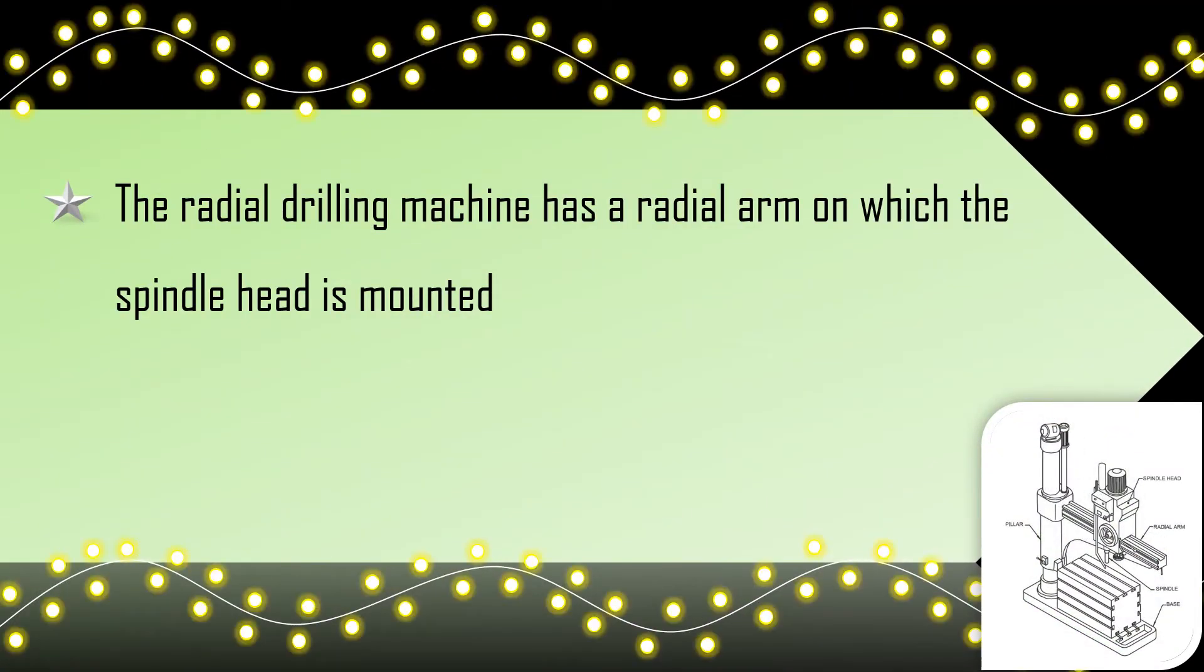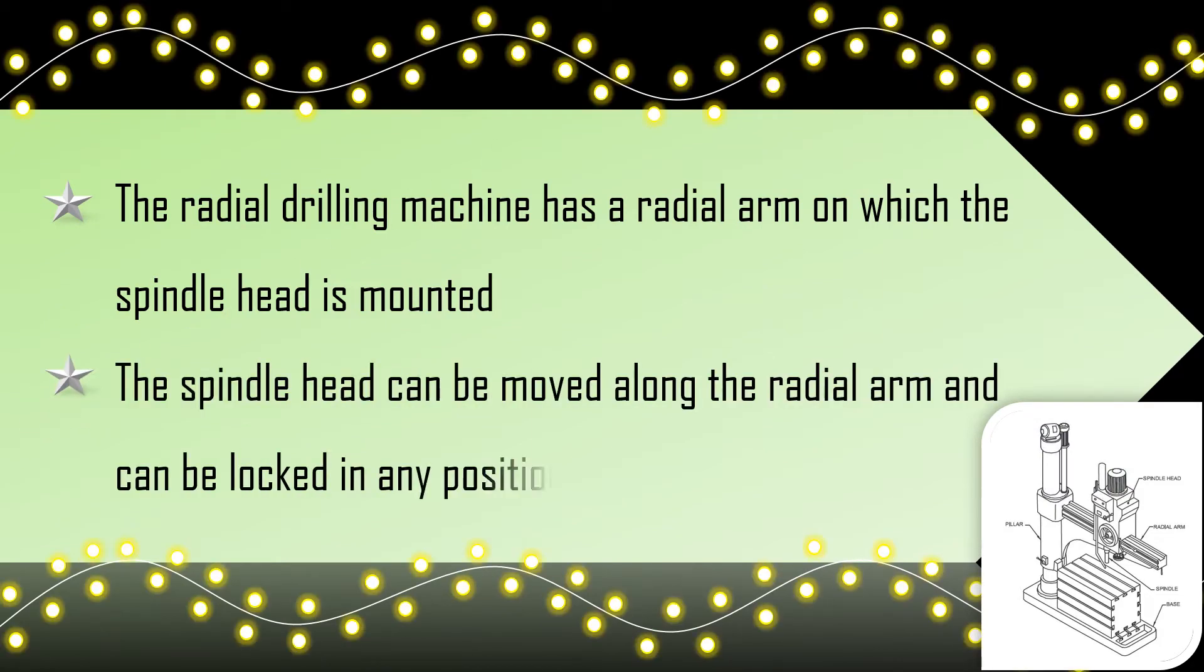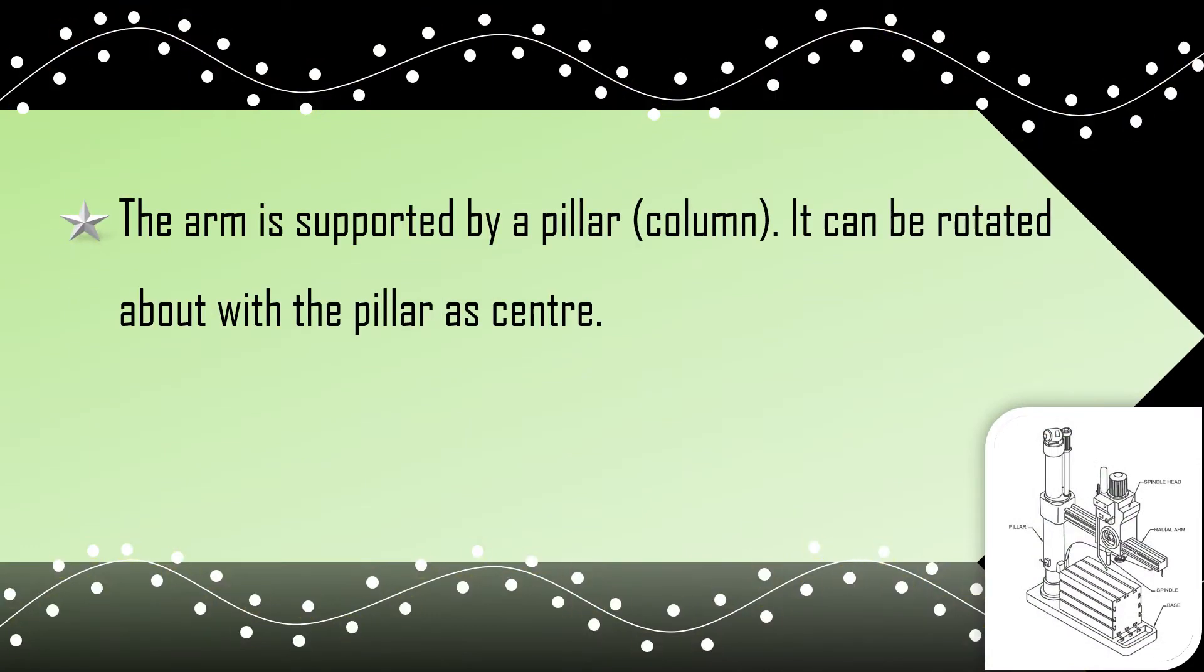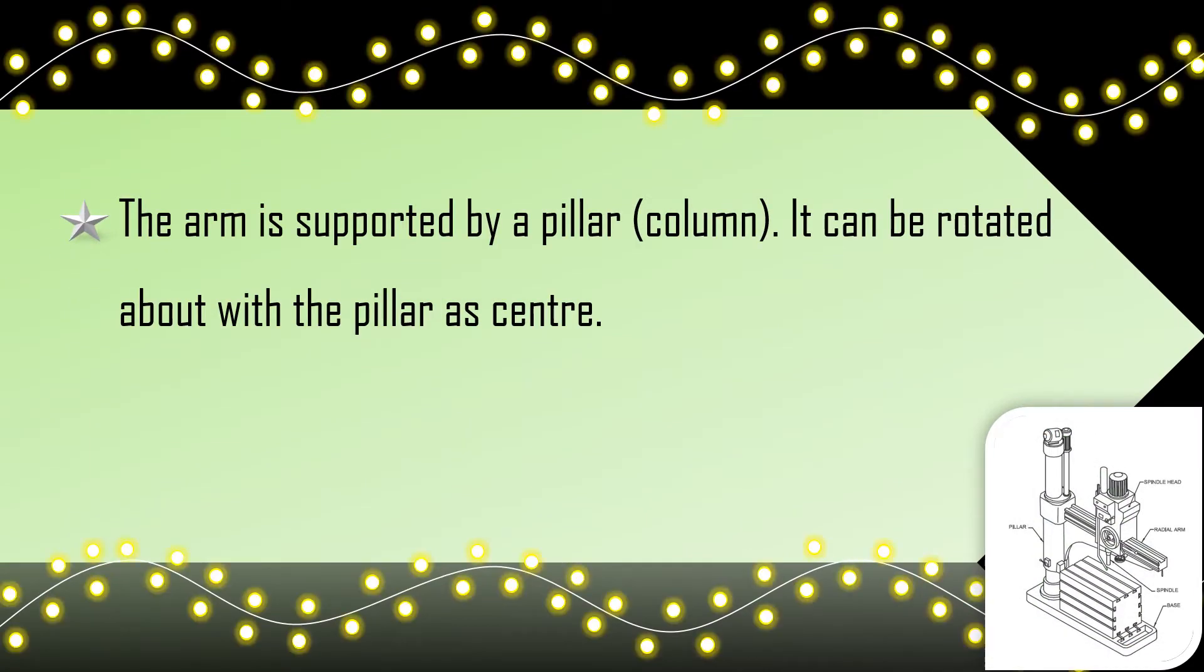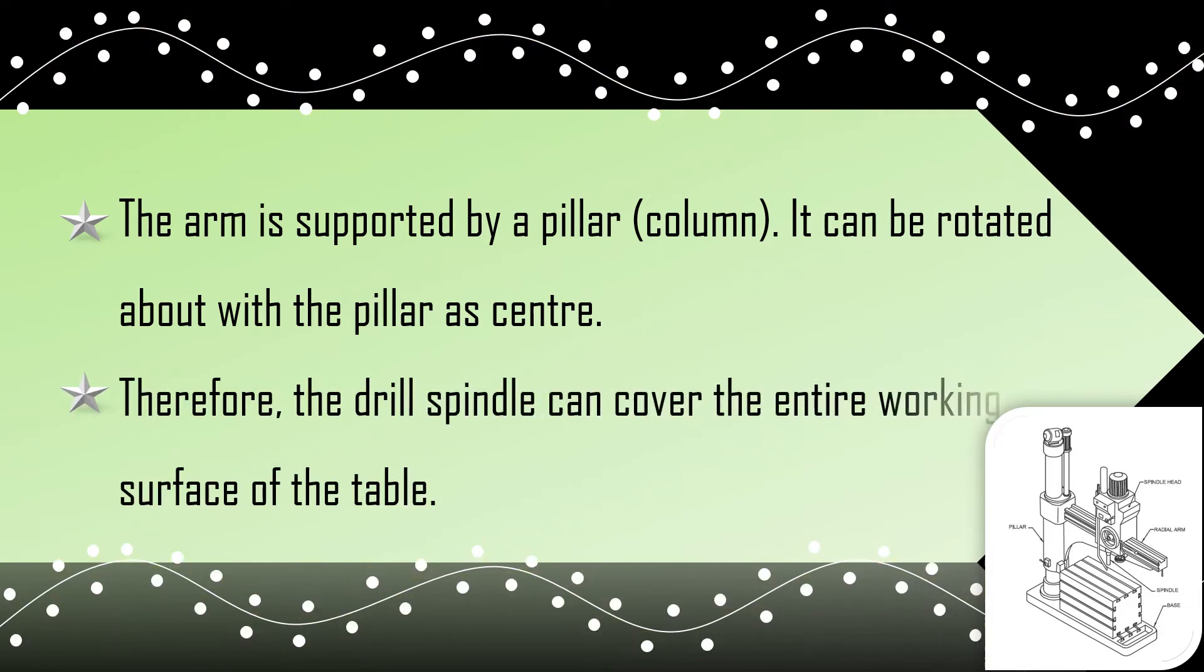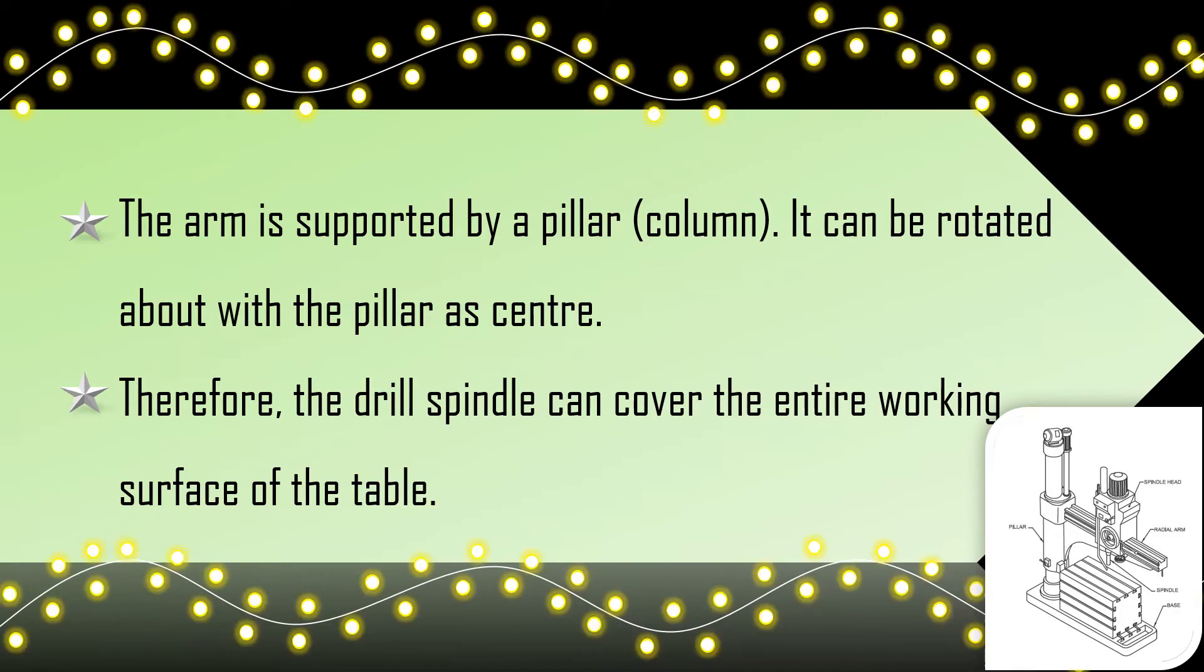The radial drilling machine has a radial arm on which the spindle head is mounted. The spindle head can be moved along the radial arm and can be locked in any position. The arm is supported by a pillar column. It can be rotated about with the pillar as center. Therefore, the drill spindle can cover the entire working surface of the table.